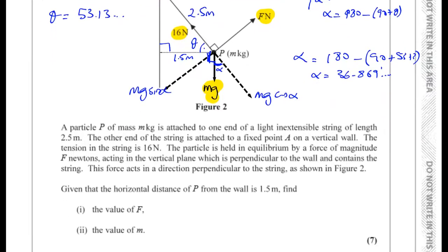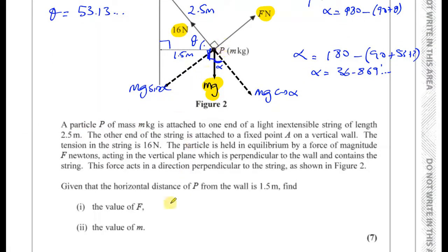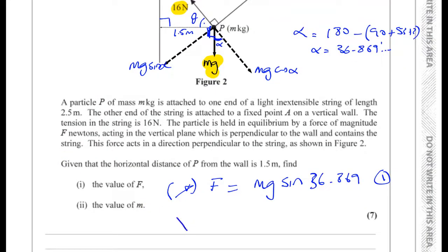So now, let's look at the situation. What I can do is I can resolve the forces in this direction. In that case, I'll have F is equal to Mg times sine of 36.869. So that's one equation. I can get another equation by resolving in this direction. In which case, I've got 16 is equal to Mg times cosine of 36.869.